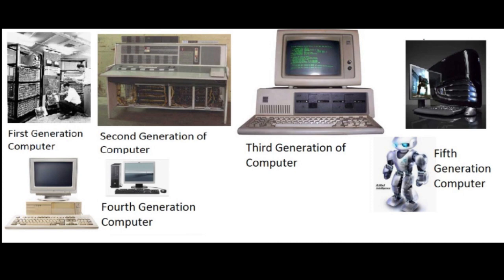In this generation, magnetic cores were used as the primary memory, and magnetic tape and magnetic disk as secondary storage devices. Some examples of second generation computers are Honeywell 400, IBM 7094, CDC 1604, etc.